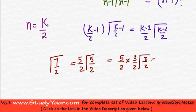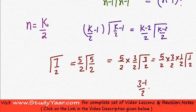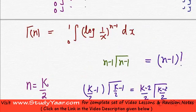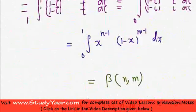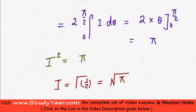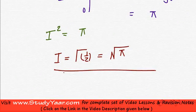Similarly, gamma 3 by 2 would be equal to 5 by 2 into 3 by 2 into half gamma 1 by 2. 3 by 2, 3 minus 1 upon 2, 3 minus 1 upon 2 which is half into gamma half. And what is the value of gamma half? We have already seen it. Your gamma half is root pi.